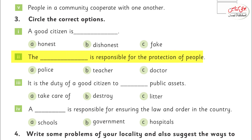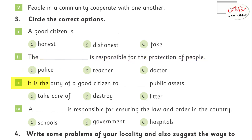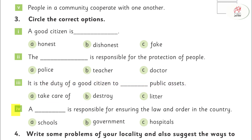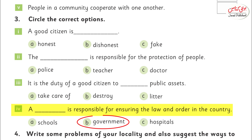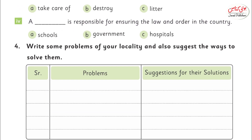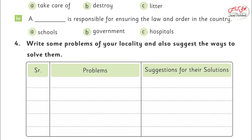It is a duty of a good citizen to take care of public assets. A blank is responsible for ensuring law and order in the country — government. Question number four: write some problems of your locality and also suggest the ways to solve them.